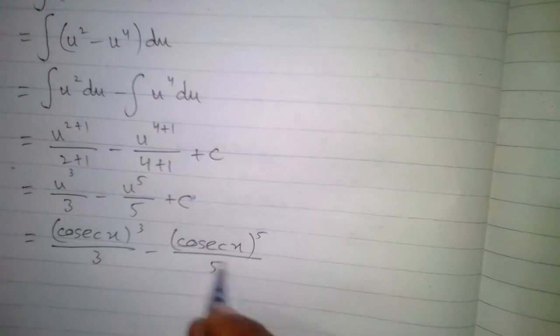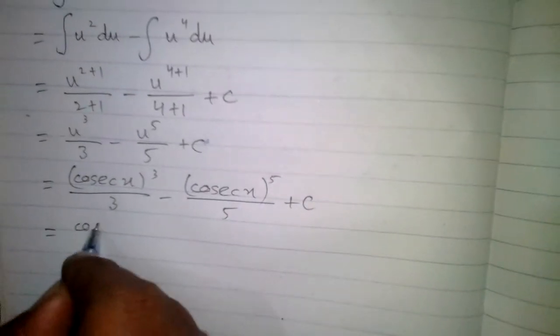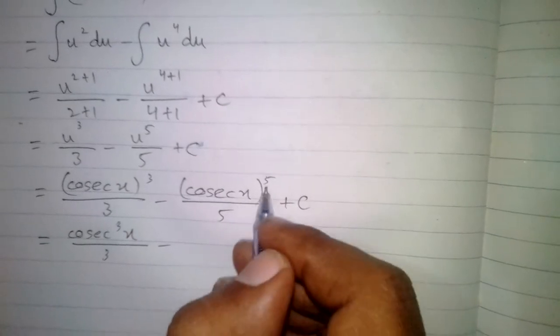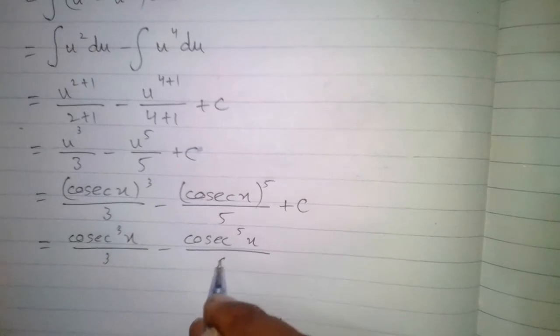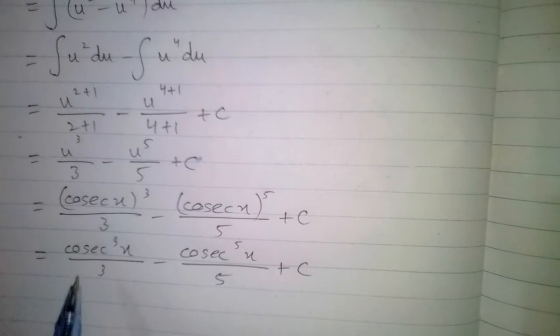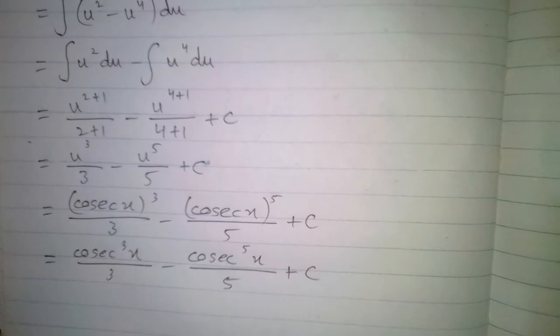Now we put back the value of u which is cosec x, so we have cosec x to the power 3 upon 3 minus cosec x to the power 5 upon 5 plus c. So the integral of cot cube x cosec cube x is cosec cube x upon 3 minus cosec to the power 5 x upon 5 plus c, where c is the constant of integration.